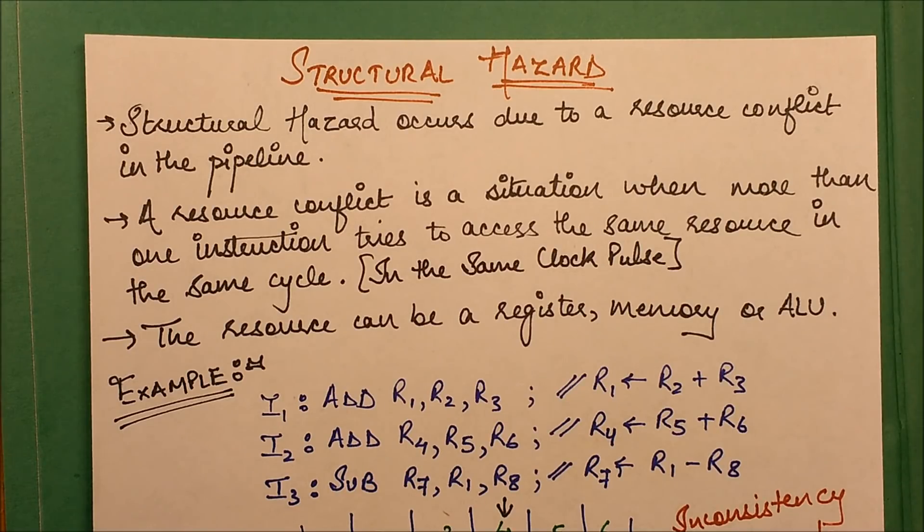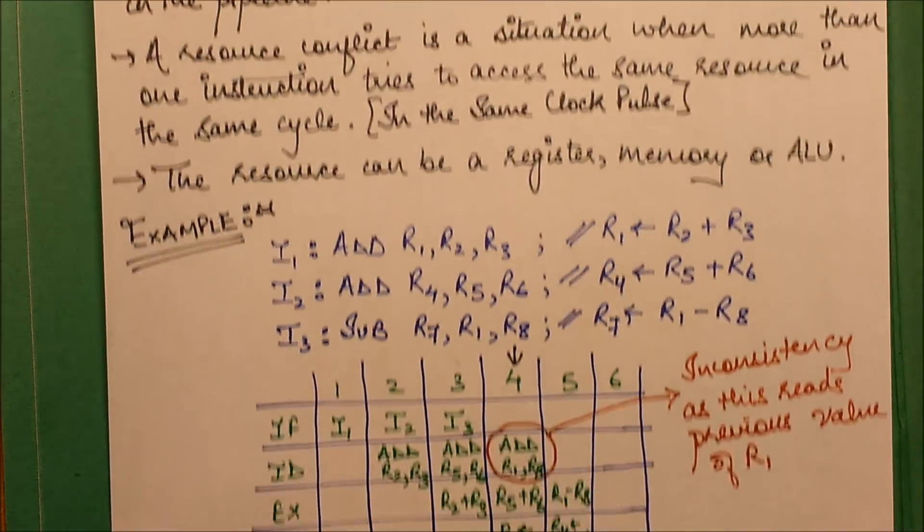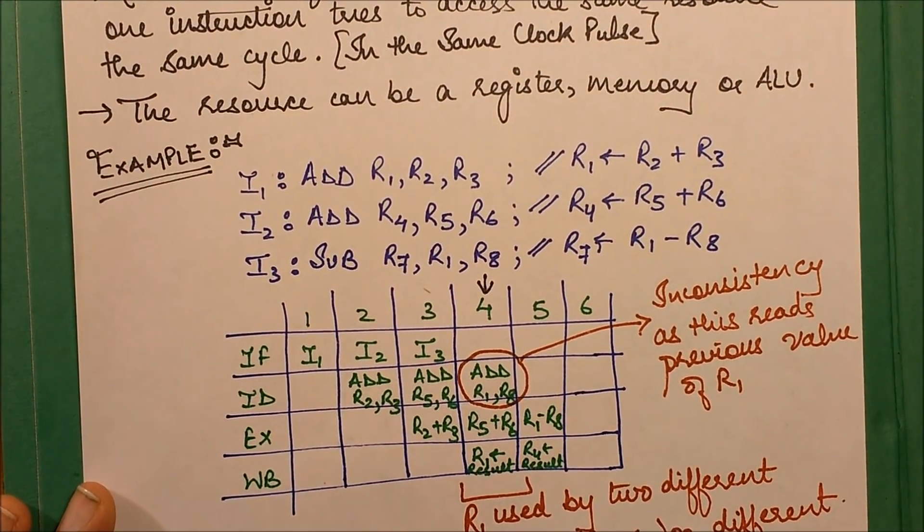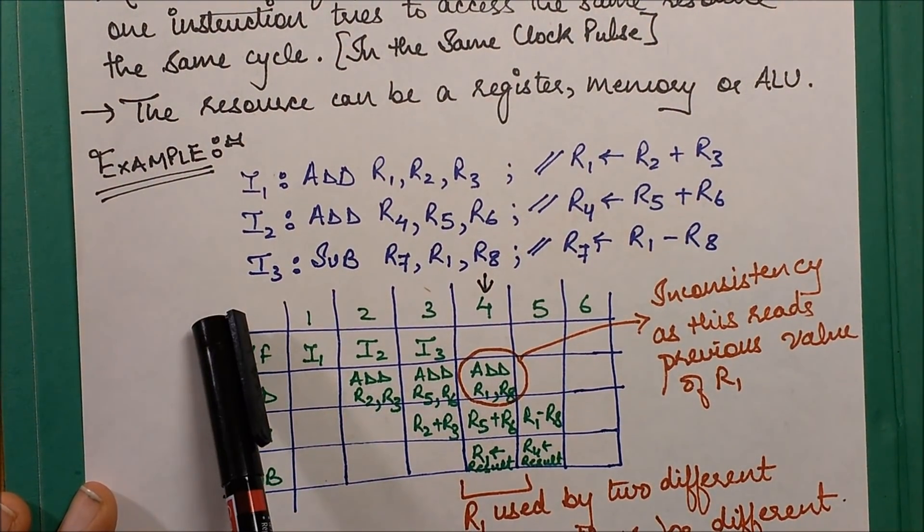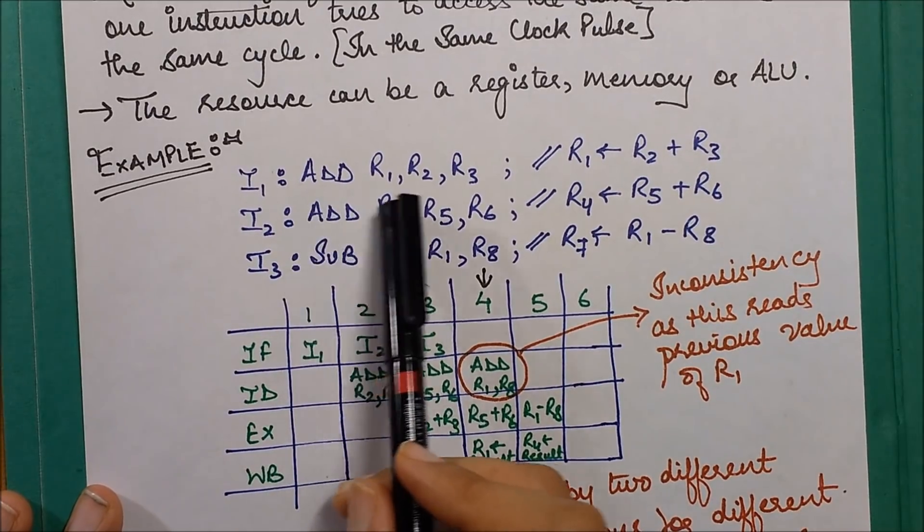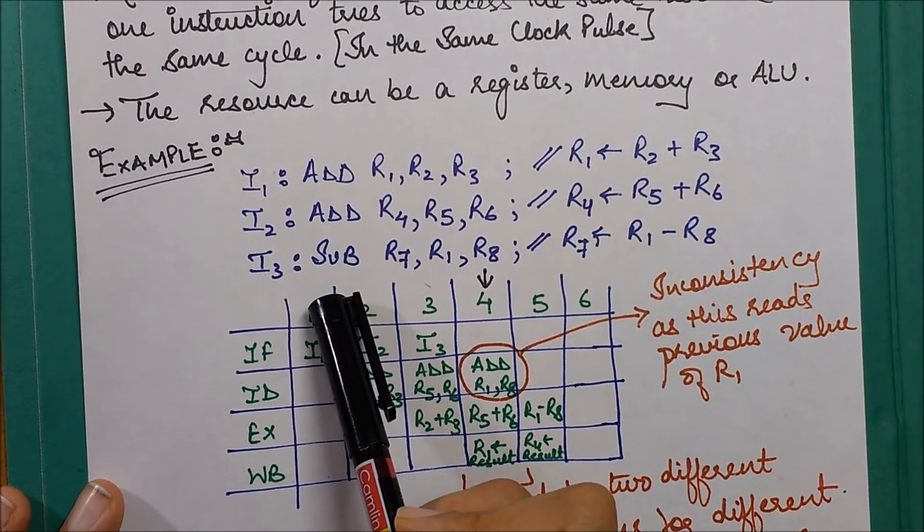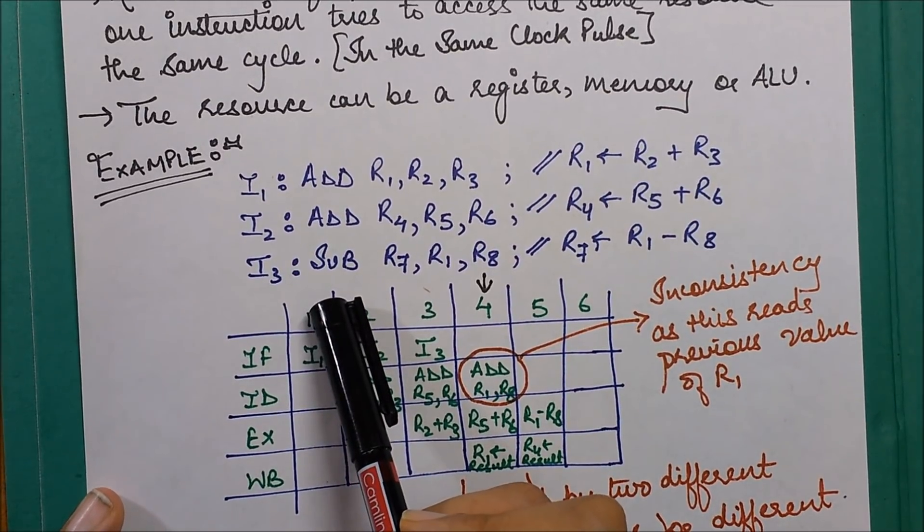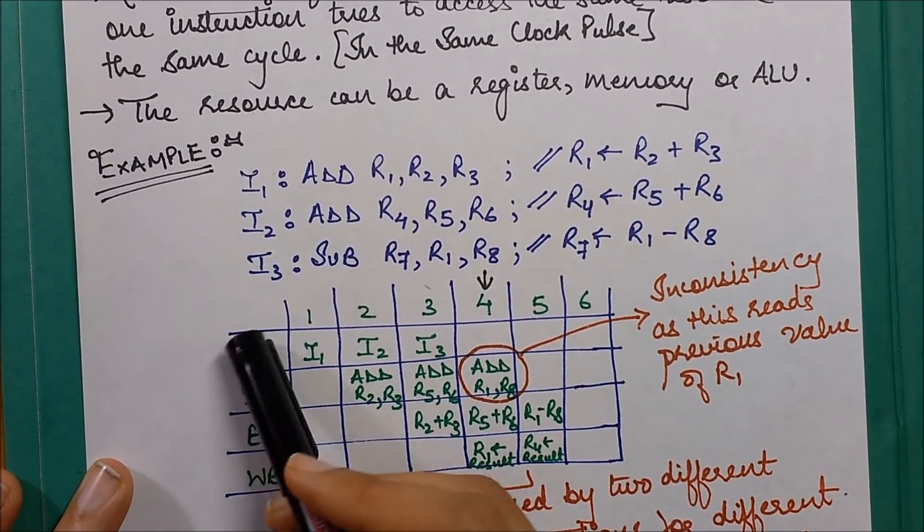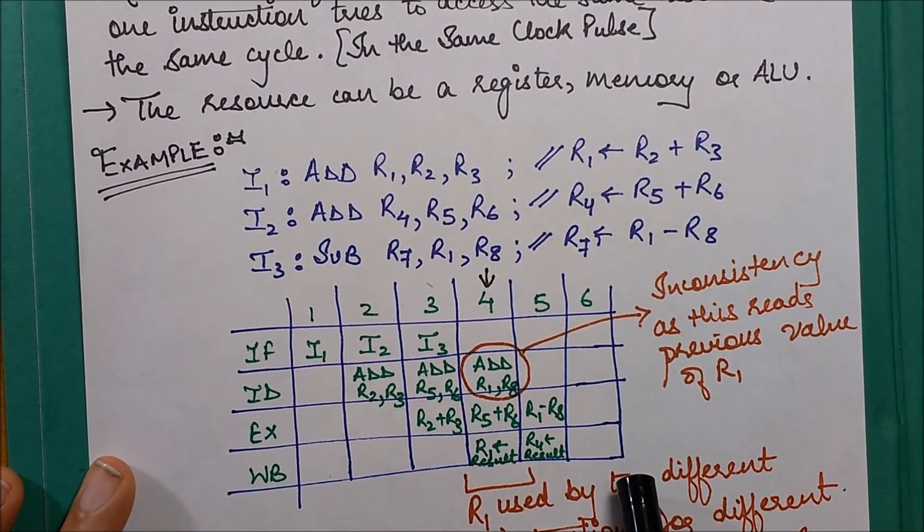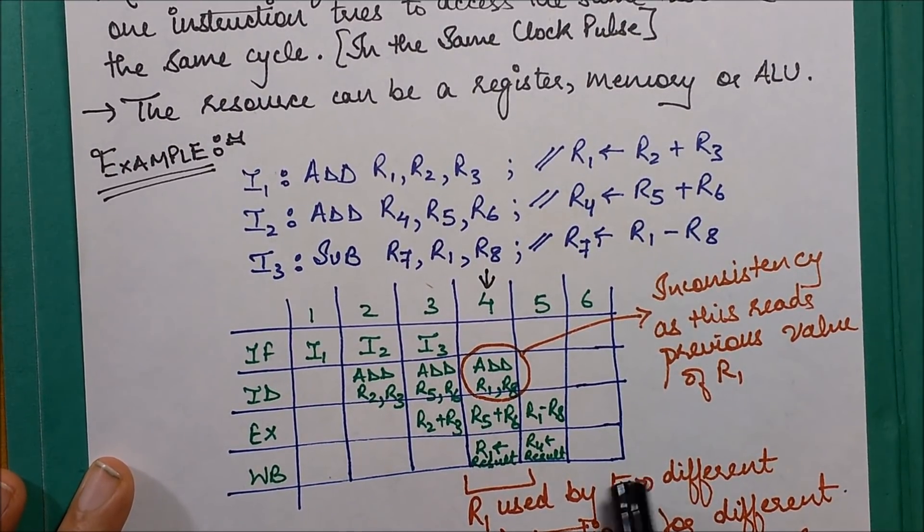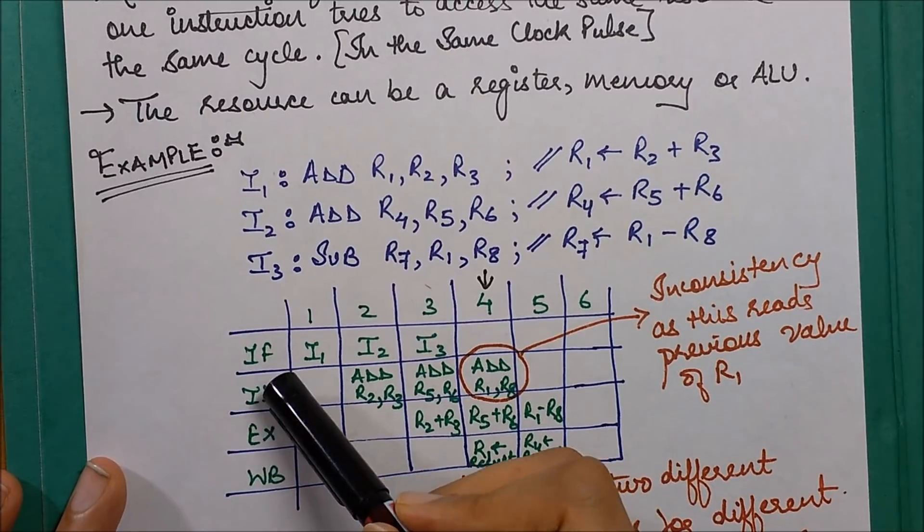Let's understand it with the help of an example. We have three instructions with their labels - two of them are ADD instructions and the third one is a SUB instruction. When you construct this instruction table, you have four stages: IF, ID, EX, WB - instruction fetch, instruction decode, execute, and write back.